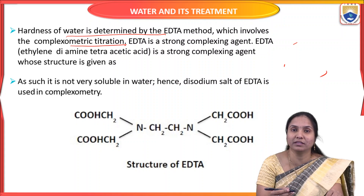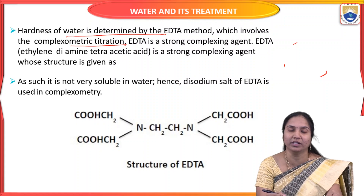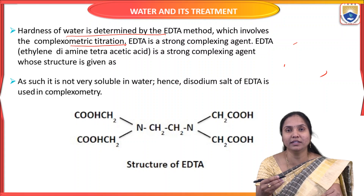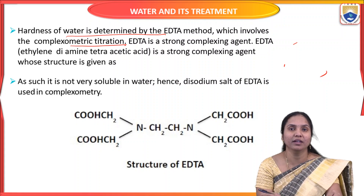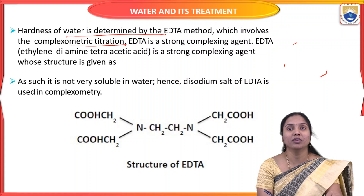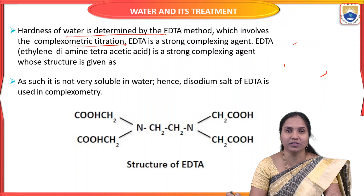EDTA forms complexes with hardness-causing ions present in the water, like Calcium, Magnesium, Bicarbonates, Fluorides, and Sulphates. When EDTA is added to this water, it forms complexes with hardness-causing ions — that's why this method is called Complexo-Metric Method or EDTA Method. EDTA is also called a Complexing Agent.